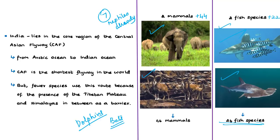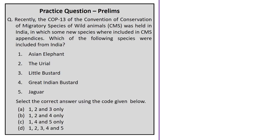In this discussion we saw about the addition of new migratory species to the CMS convention and specifically about the species added from India. The practice question for this section will be discussed in the last session.